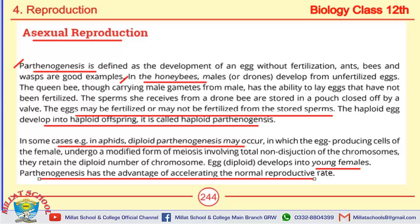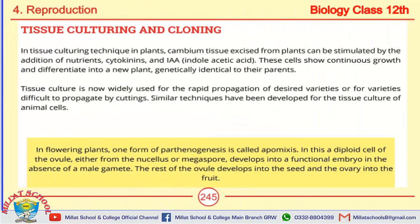The next topic is tissue culturing and cloning. In tissue culturing technique in plants, cambium tissues excised from plants can be stimulated by the addition of nutrients, cytokinins, and IAA. These cells show continuous growth and differentiate into new plants that are genetically identical to their parents.